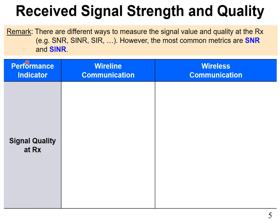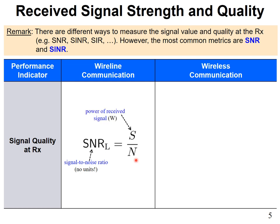Let's classify SNR and SINR and how they're typically used for different types of communication. Looking at signal quality at the receiver, comparing wireline versus wireless communication: in wireline communication, we typically talk of SNR — your signal S over noise N. This is your signal-to-noise ratio with no units. The received signal power S and the power of AWGN N are what we're working with.